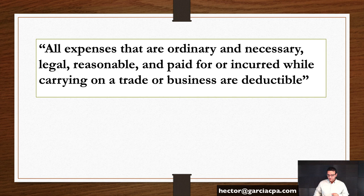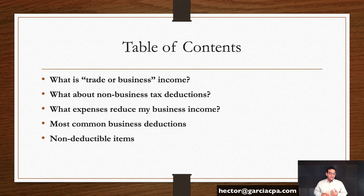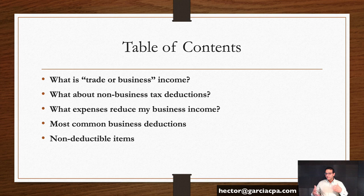So what we're going to be talking about in this video is essentially five things. One, let's describe what trade or business income means. Two, let's briefly touch base about non-business tax deductions. Three, we'll talk about what expenses reduce my business income — specifically those five elements the expense needs to have. Then we'll talk about some common business tax deductions that fall under most businesses. And finally, non-deductible items — the typical things people tend to think are deductible but aren't.